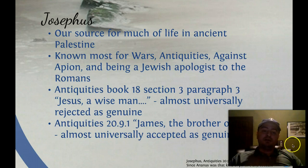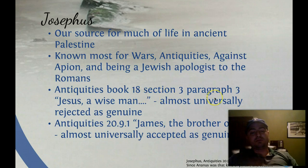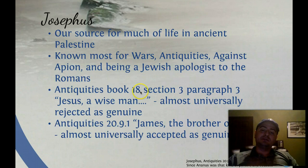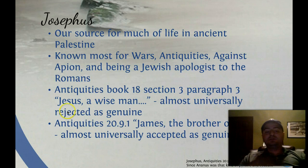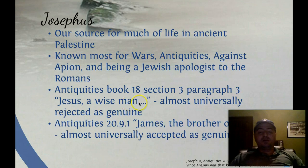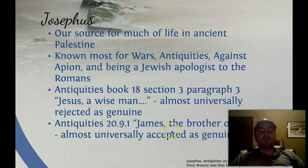In Antiquities book 18, section 3, paragraph 3 — referenced as 18.3.3 — he says 'Jesus, a wise man,' and this is almost universally rejected as genuine. We'll get to the reason for that in just a minute. Then again in Antiquities, just two chapters later, he says 'James, the brother of Jesus.' We know from the Gospels and early Christian tradition that James was indeed a brother of Jesus, and this second reference is almost universally accepted as genuine.